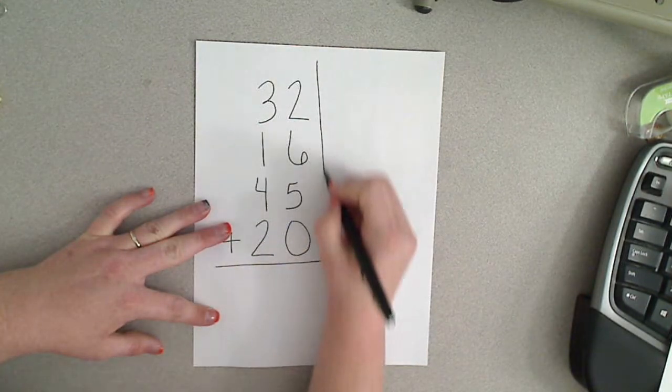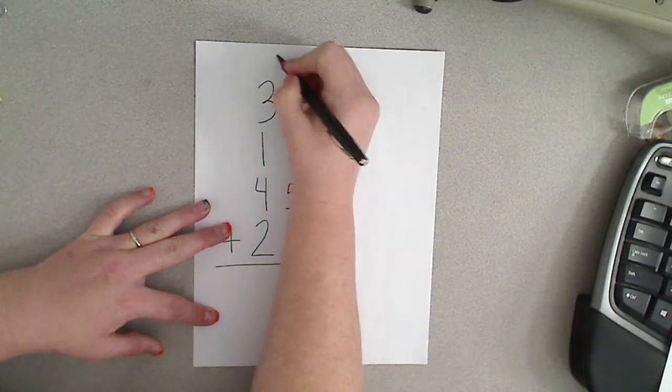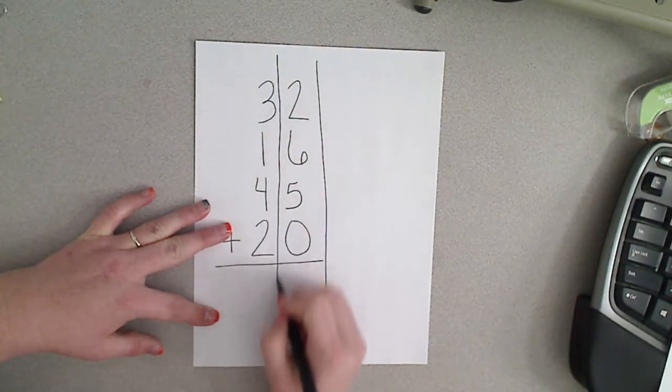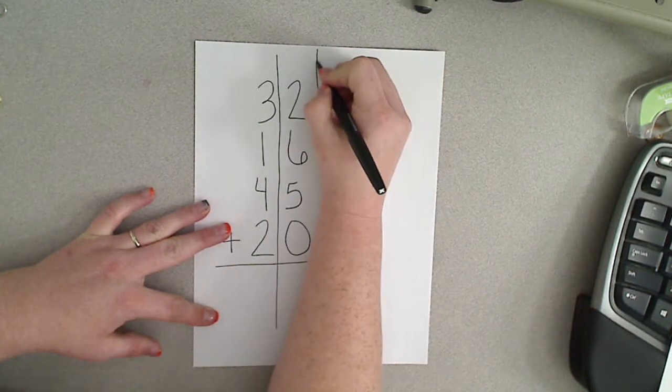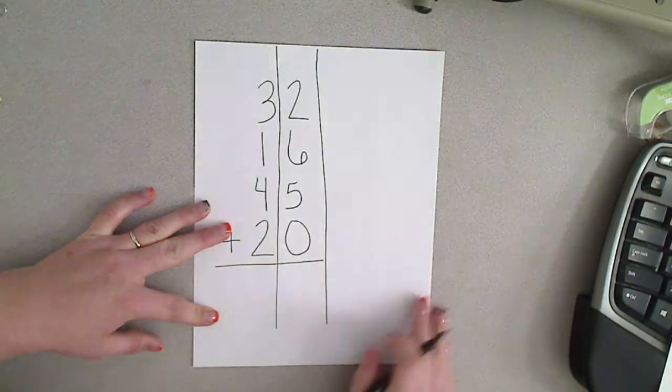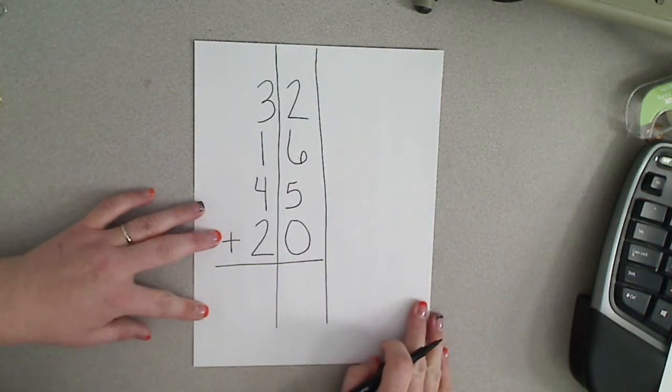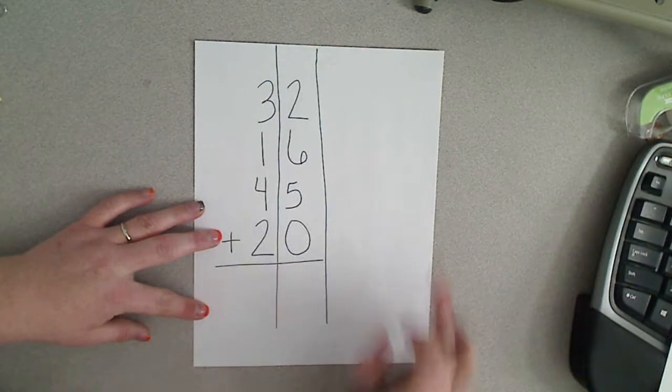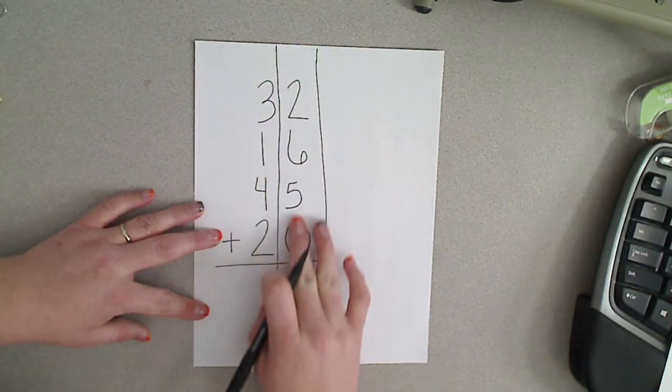We need to draw our place value lines just to keep ourselves organized, and we always take our place value lines a little bit higher up top in case we need to regroup. Now the first thing that students need to do is they need to add the numbers in the ones place.